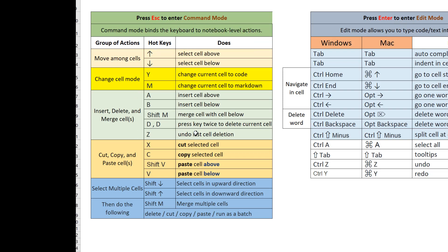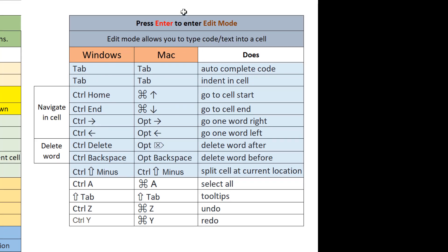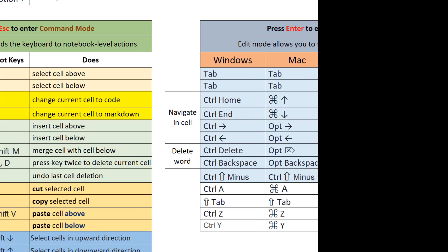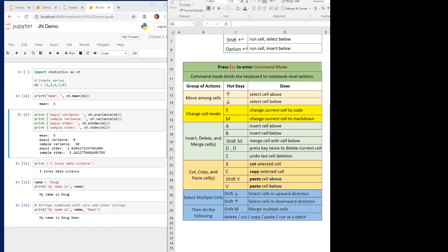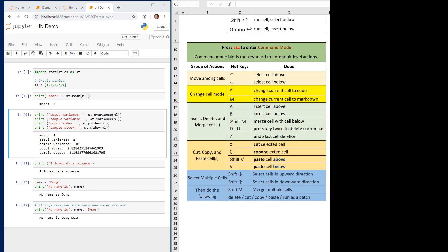For example, if I wanted to select the cell above, I would hit Escape and then use the up arrow to select the cell above. Over here, edit mode — which you press Enter to get into — is really for working within a cell, for editing and typing in a cell itself. The main purpose of this training video is to show you the command mode operations.